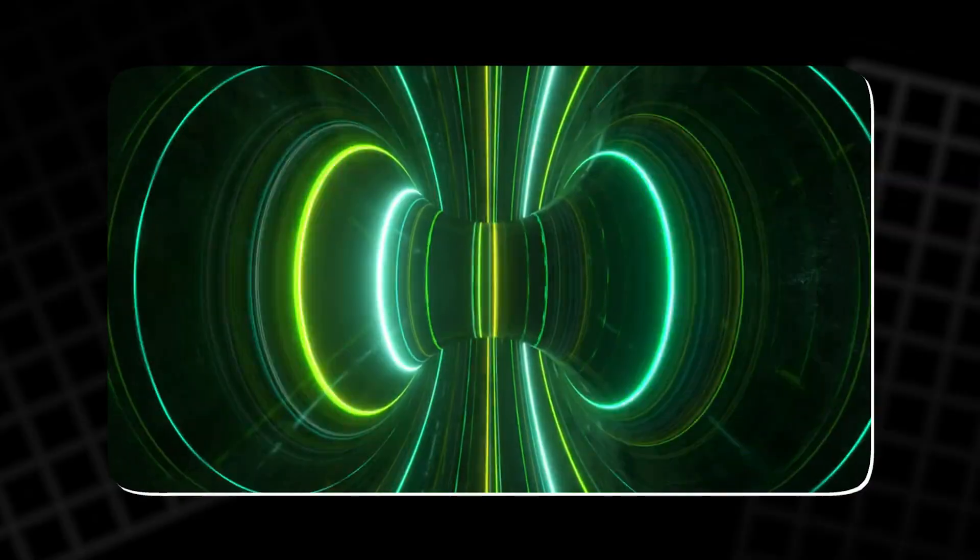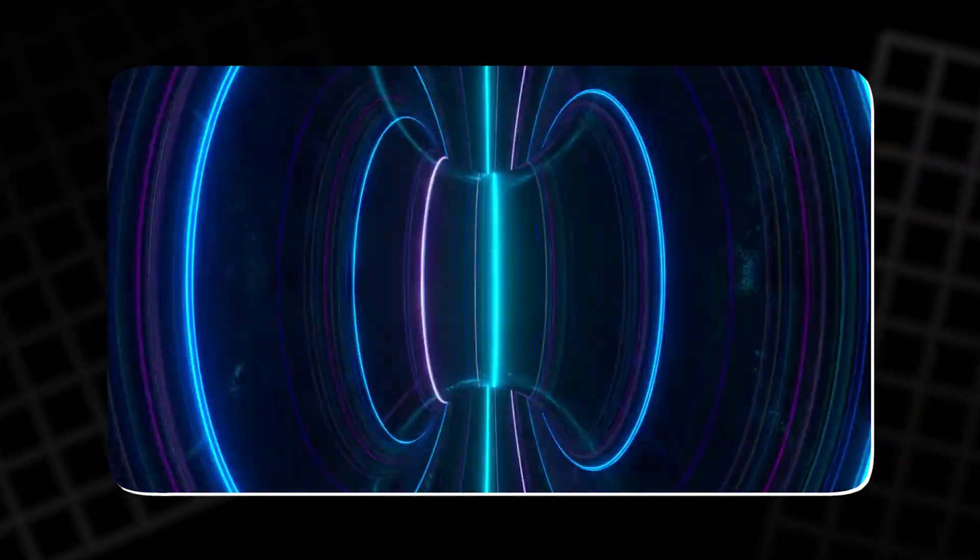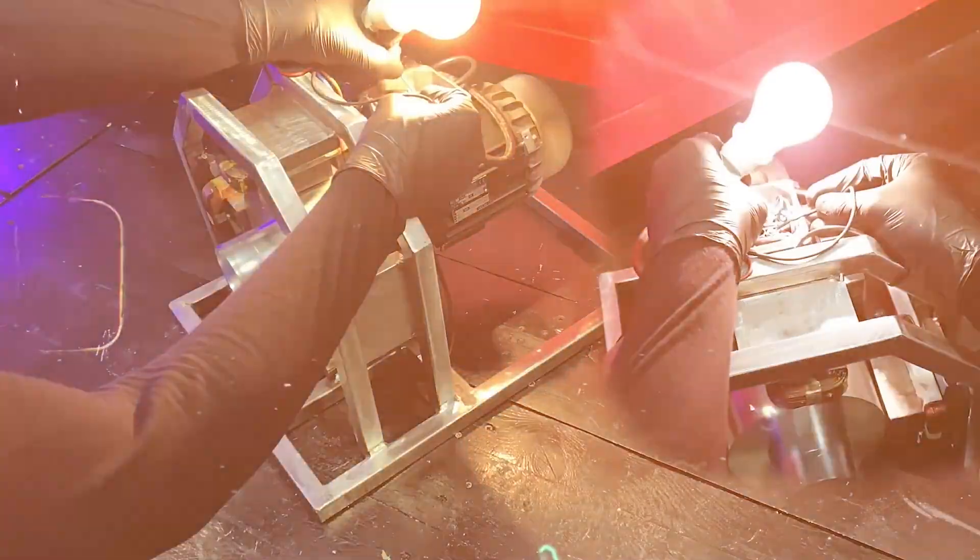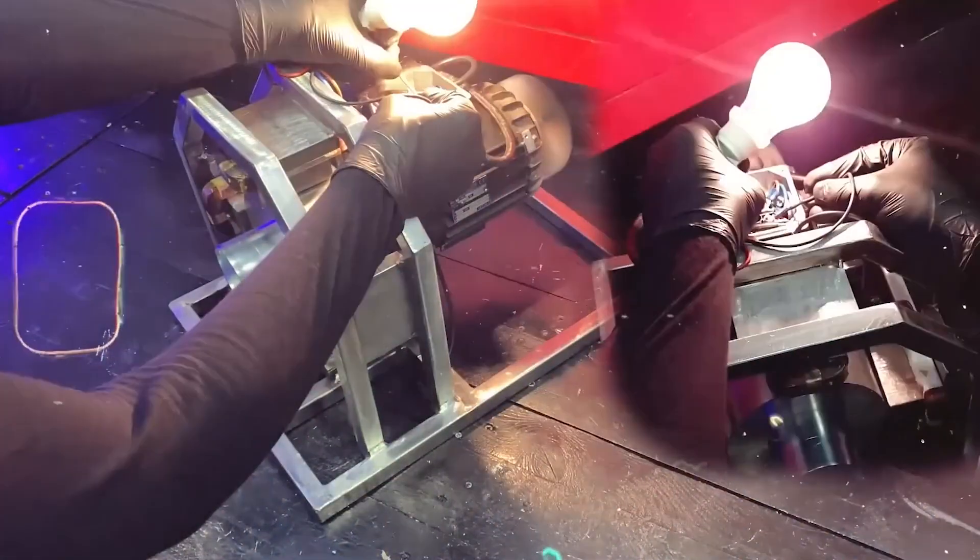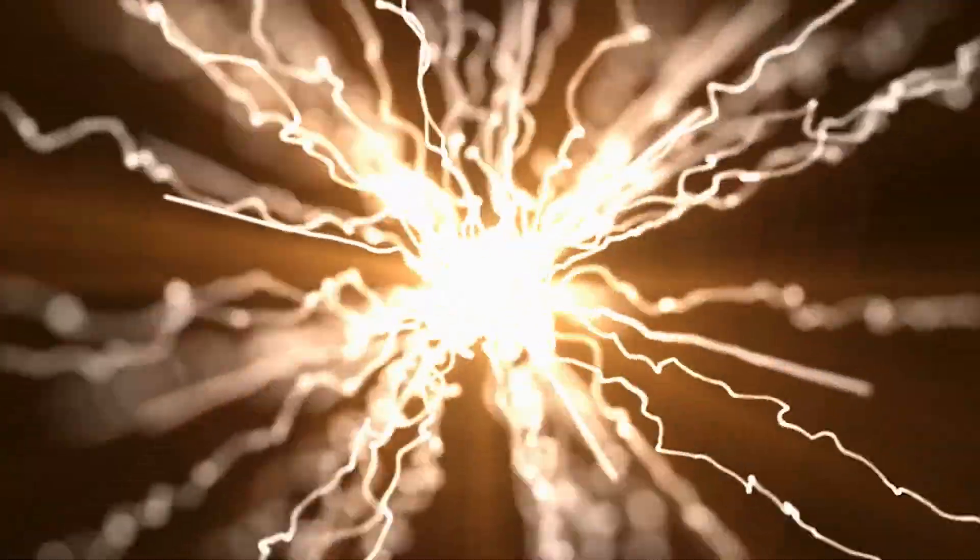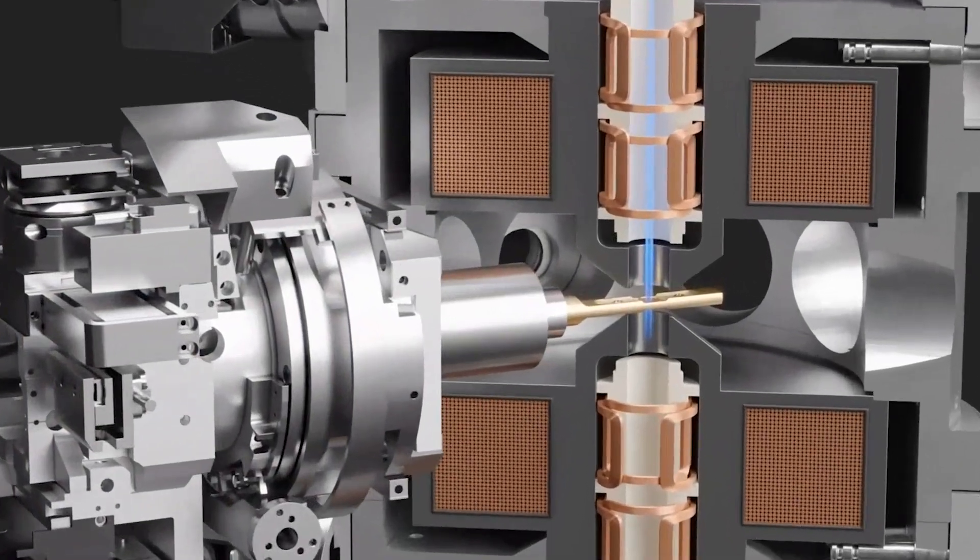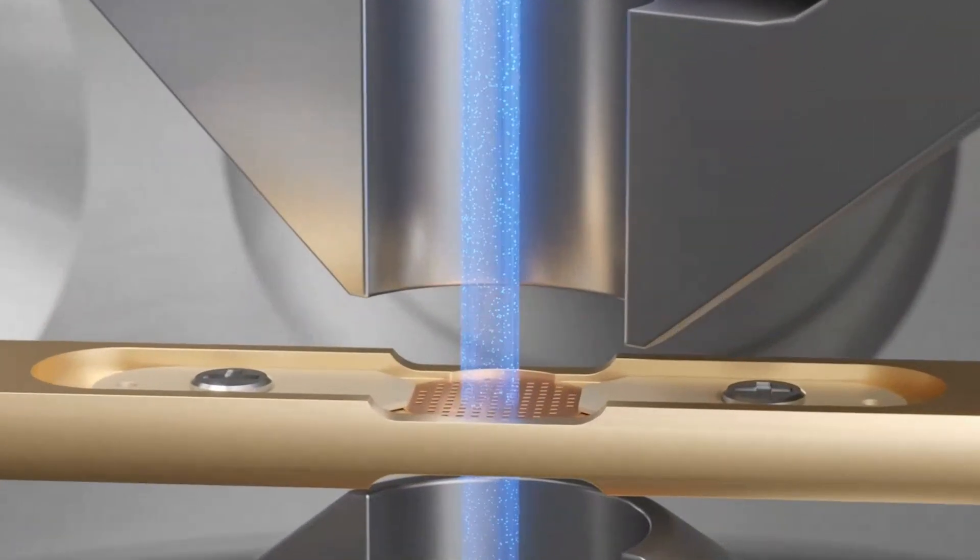This is the fundamental reason gases glow when exposed to electromagnetic fields or electrical currents. The color of the emitted light depends entirely on the energy difference between the electron's excited and ground states. Every element has a unique electronic structure, meaning the energy gap is different for each one. Therefore, the color of light released is like a fingerprint for that element.